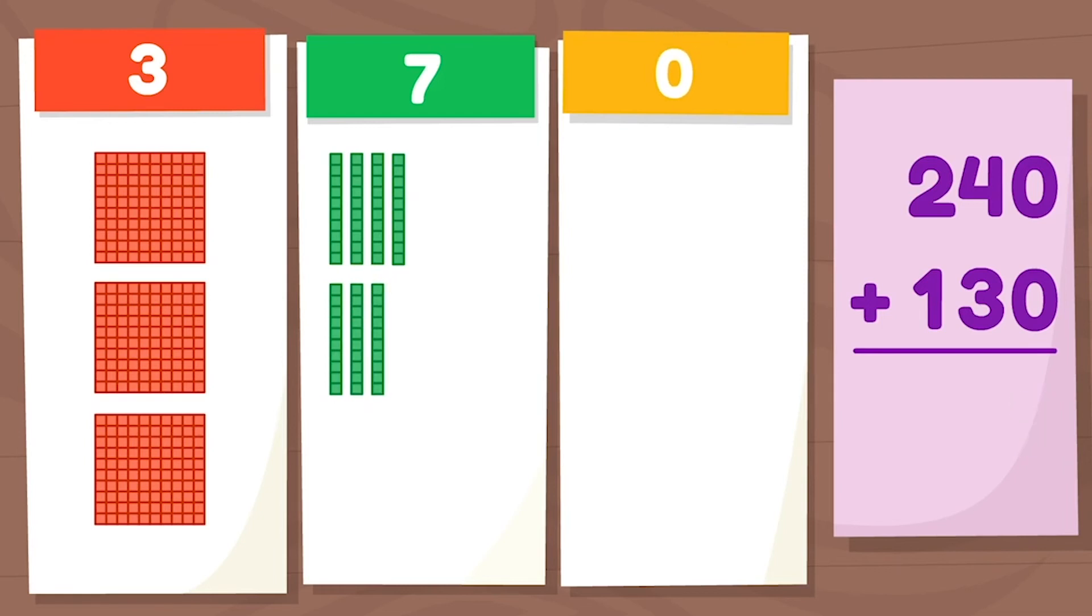That means we have three hundred and seventy total. Two hundred and forty plus one hundred and thirty equals three hundred and seventy. Whew, impressive job!